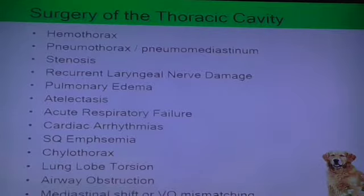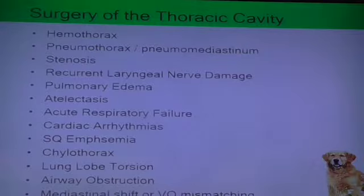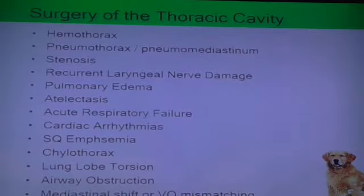Additional thoracic complications include acute respiratory failure, cardiac arrhythmias, subcutaneous emphysema, and chylothorax - because the thoracic duct comes down from the GI tract and drains into a vessel near the heart. We sometimes ligate it surgically. You can also have lung lobe torsion - previous thoracic surgery is a risk factor for that. Other issues include airway obstruction, mediastinal shift, and V/Q mismatching.